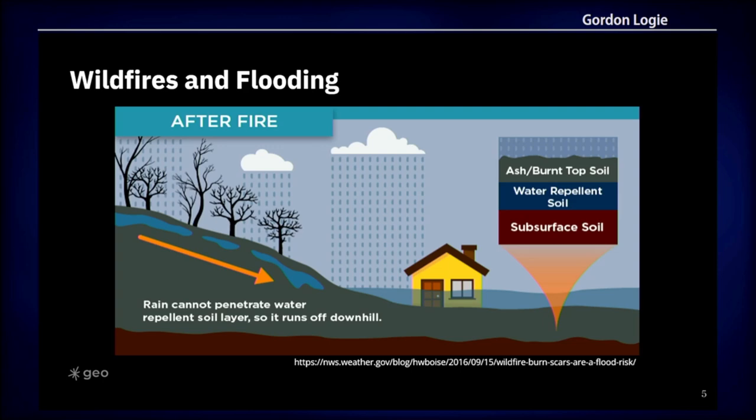Consequently, you can have more rapid runoff, more runoff in total, which can cause higher stream flows and greater damage from flooding. Also, wildfire-damaged slopes are more prone to erosion, which can enhance the risk of landslides as well. Based on these linkages, we know that understanding where and when fires have occurred is important to assess potential flood risk.